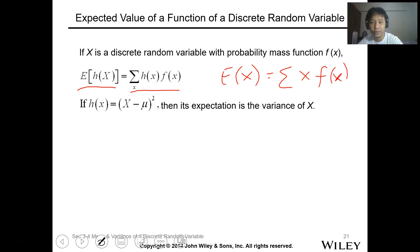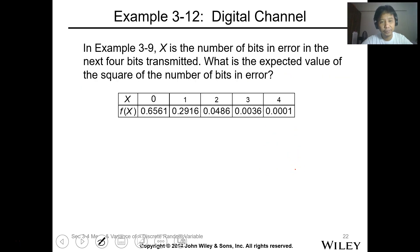So you just replace X with h(x). So if your h(x) is x minus mu squared, it becomes the expected value of x minus mu squared. This will be your variance of X.